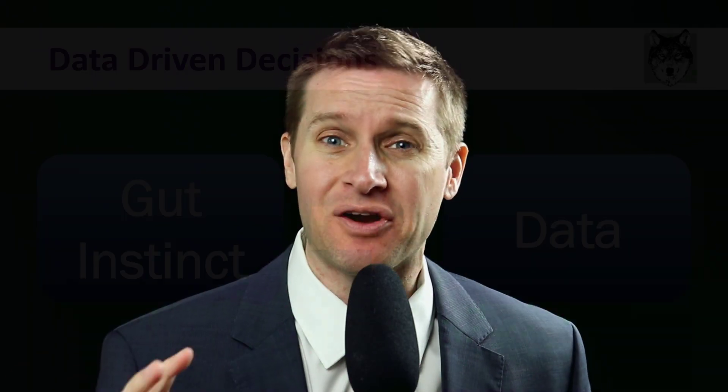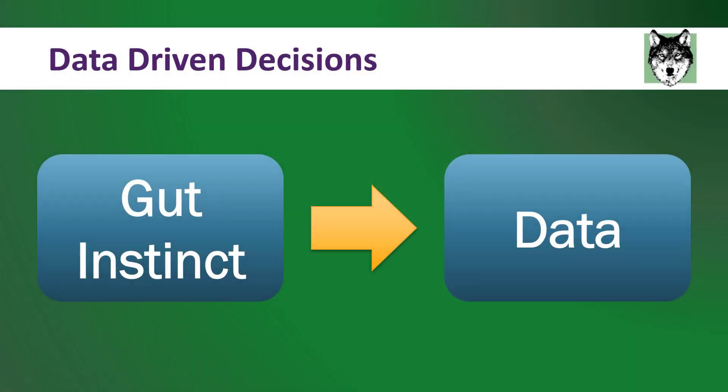Before computers, so many business decisions were made by gut instinct or intuition. But now that we have computers, we have so much data at our fingertips. The problem is that so many businesses today still operate as if all that data does not exist. They either do not know the data exists in their accounting systems, or they don't know how to pull it out. They are still making decisions the old way, but we don't have to do that anymore.